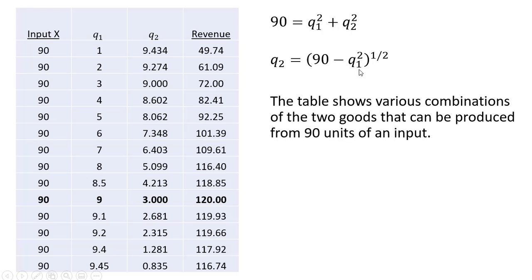I just replaced this q subscript 1 with these various numbers here in this column: 1, 2, 3, 4, and 5 to get the corresponding level of output for good 2 and then the corresponding level of revenue.